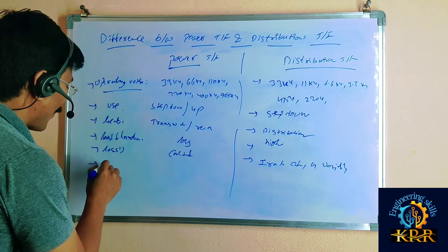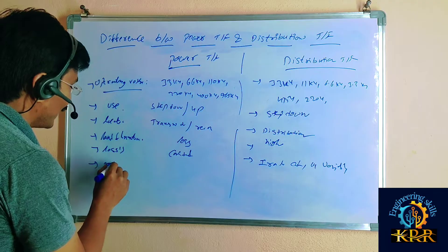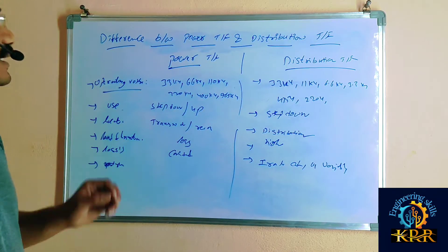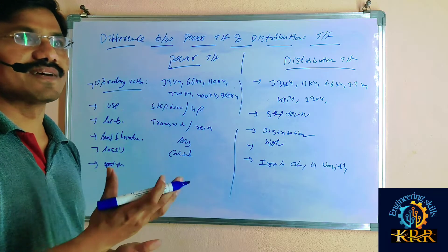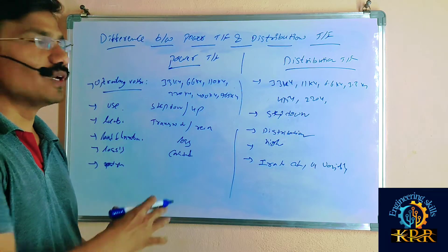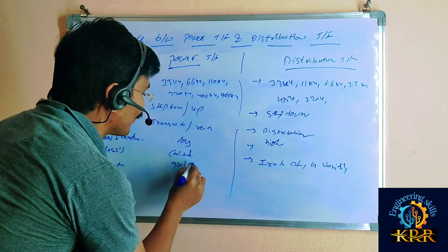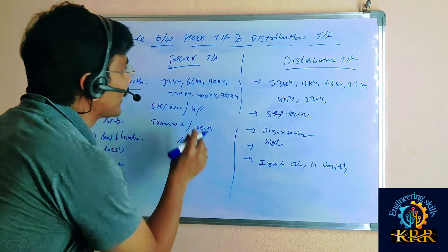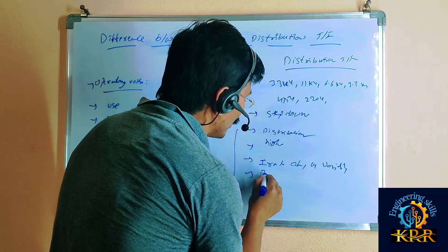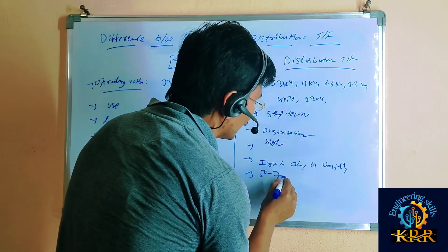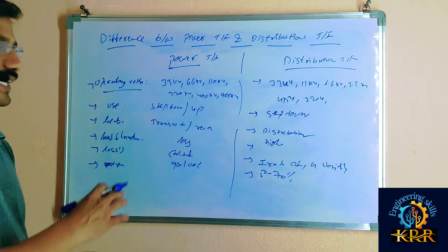If you go for the operating current, if you go for the running current, the power transformer is running at 90 to 100% of load. We are operating the power transformer at 90 to 100% of load. If you go for the distribution transformer, it is running at only 50 to 70% of load.